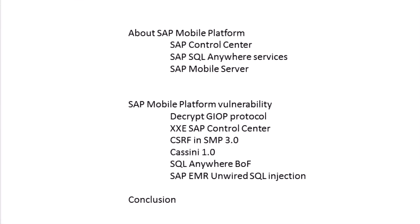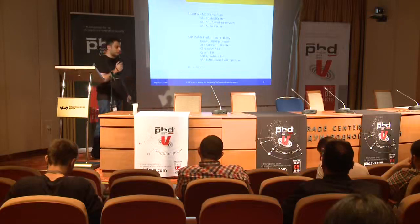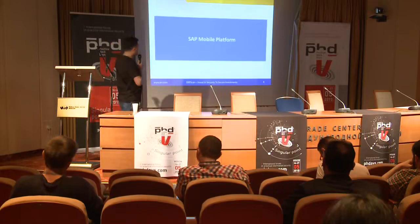Today my presentation is divided into three main parts. In the first part, we will learn about the SAP mobile platform — its main components, which components exist, how they function, and how they correlate to each other. The second part will be dedicated to SAP mobile platform vulnerabilities that we have discovered, and why we worked in these directions and how to fix them. In the third part, I will tell you some conclusions and what is to be done to minimize the threat if an attack happens against your SAP mobile system.